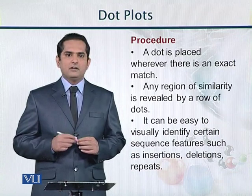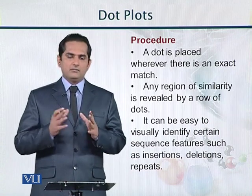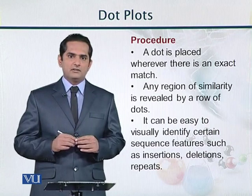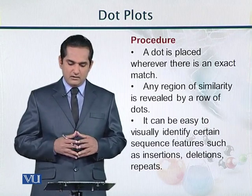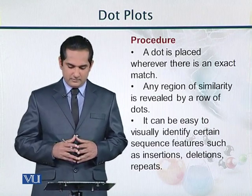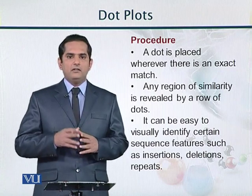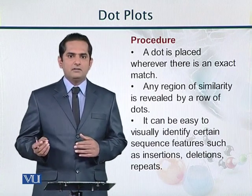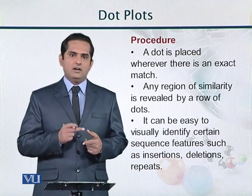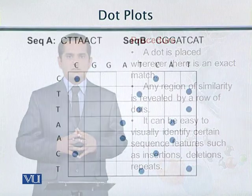If there is any level of similarity between two sequences, it will appear as a row of different dots. This makes it very easy to identify where there is similarity between two sequences, where insertion is needed, where deletion is needed, or where there is a mismatch.